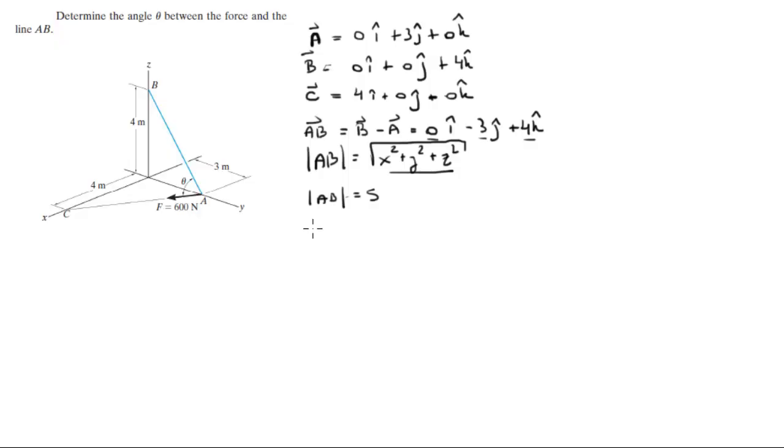Now we do the same steps, but for vector AC. AC is found by doing C minus A. And C minus A is equal to 4i minus 3j plus 0k. And with the same formula that we used to find AB, we can find the magnitude of AC, and it's also 5.